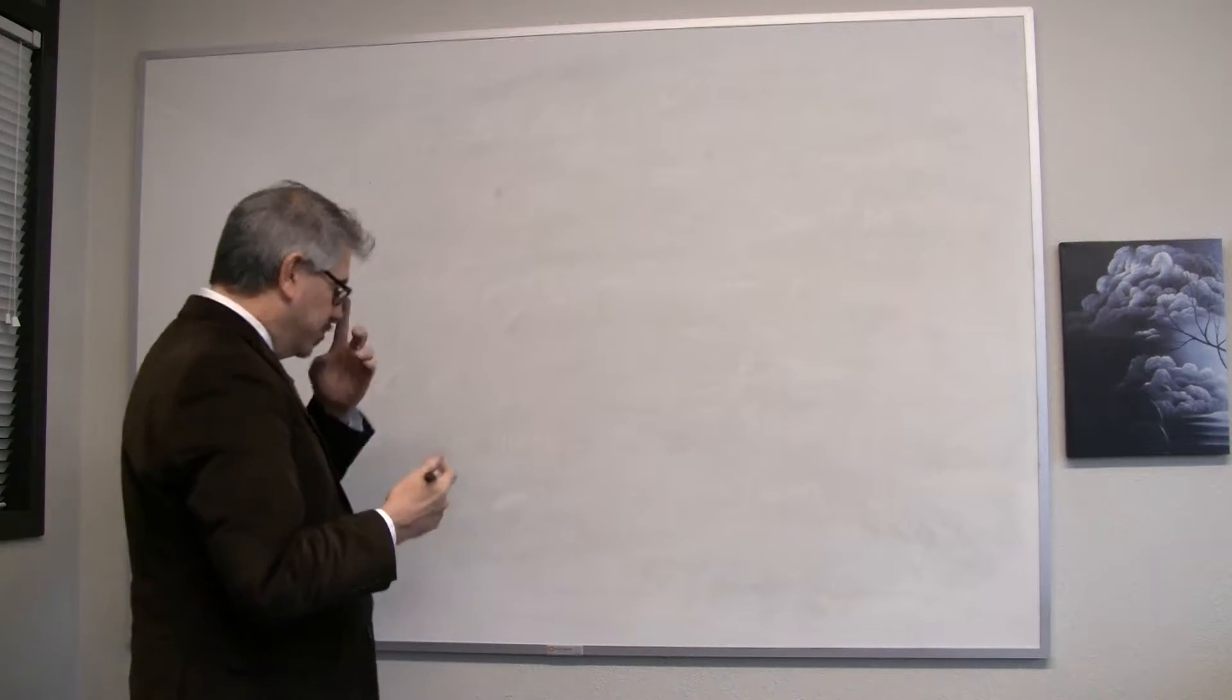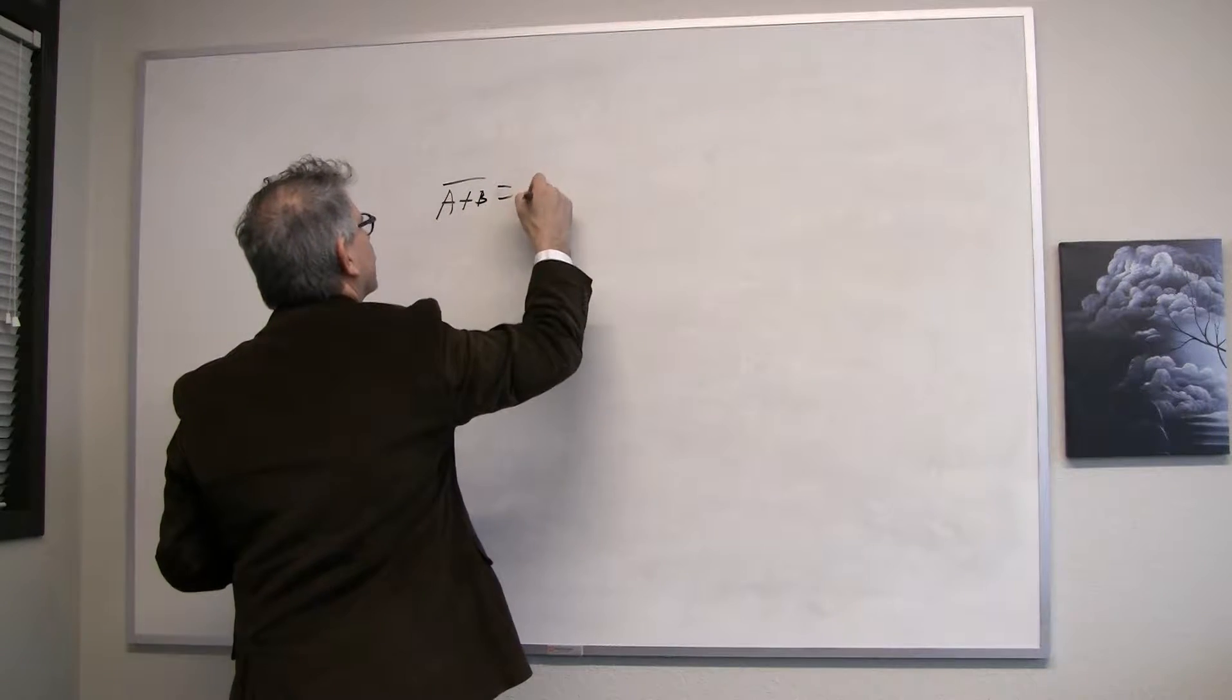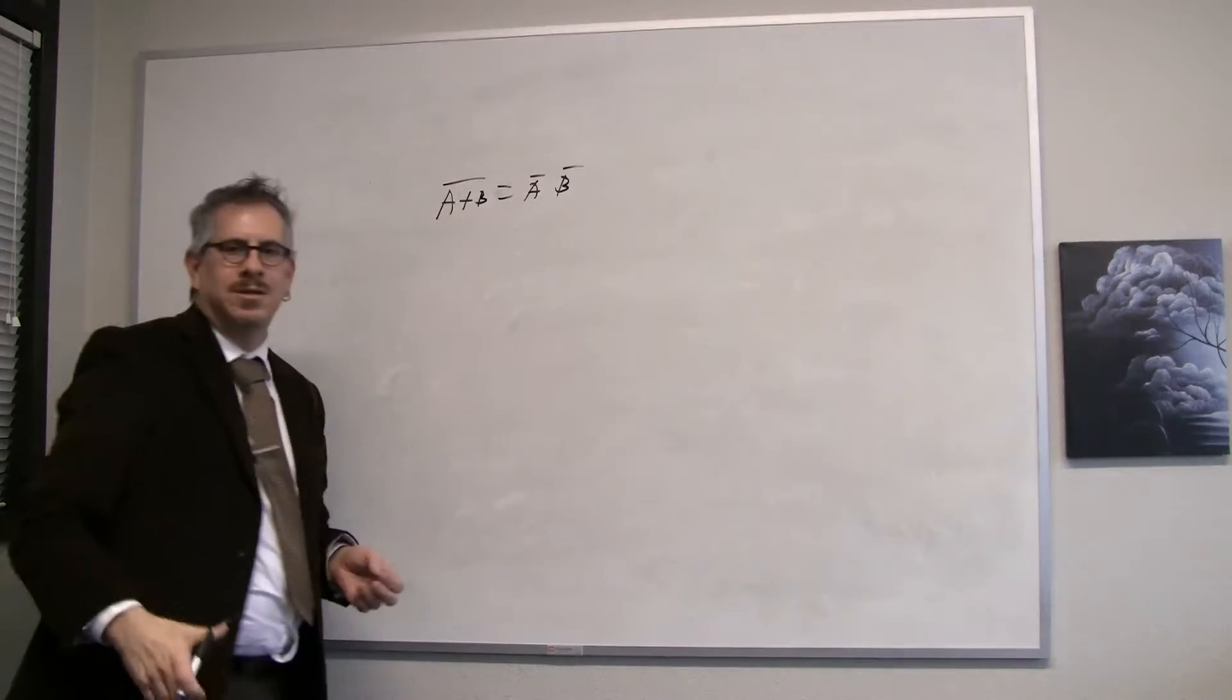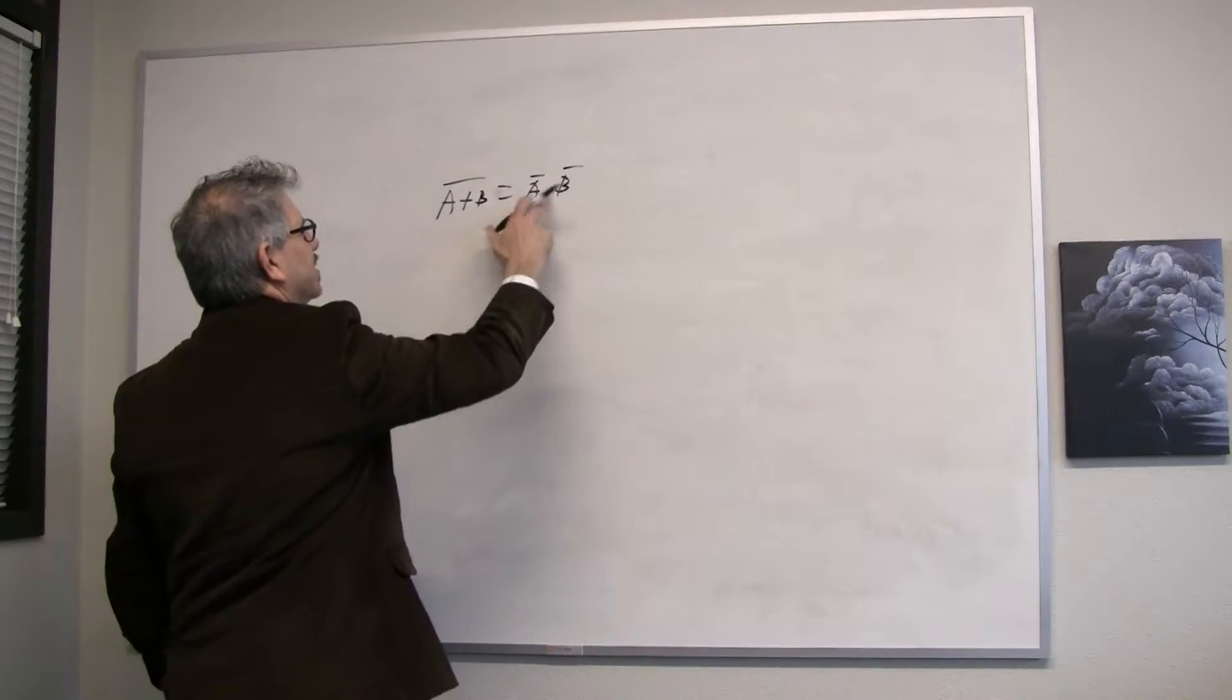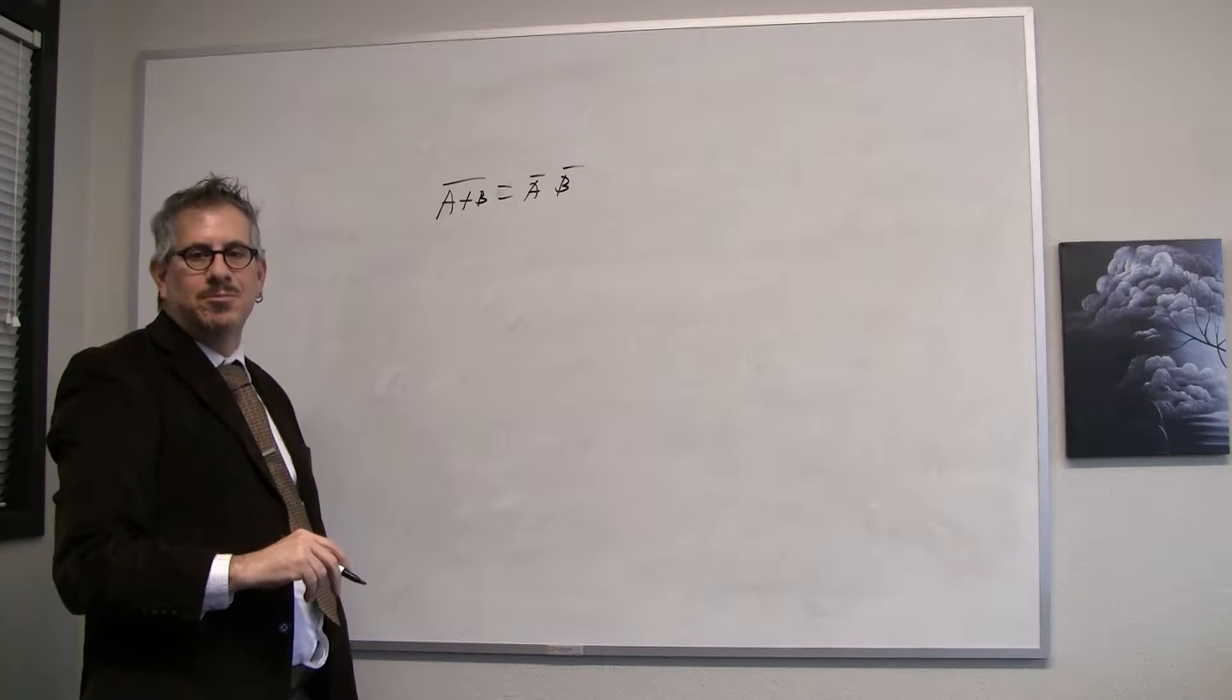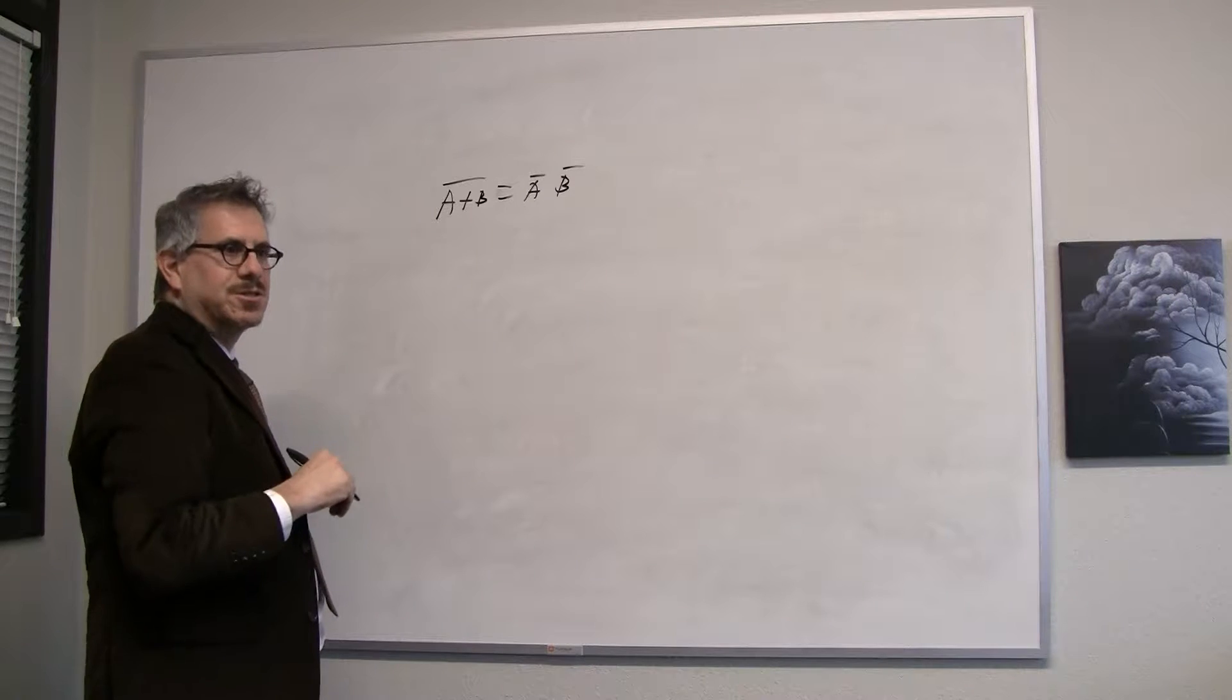For example, De Morgan's Theorem. A or B bar equals A bar B bar. If you know digital logic, the NOR of A with B is the same as the AND of A bar with B bar. And this is called De Morgan's Theorem, and we know that this is true.